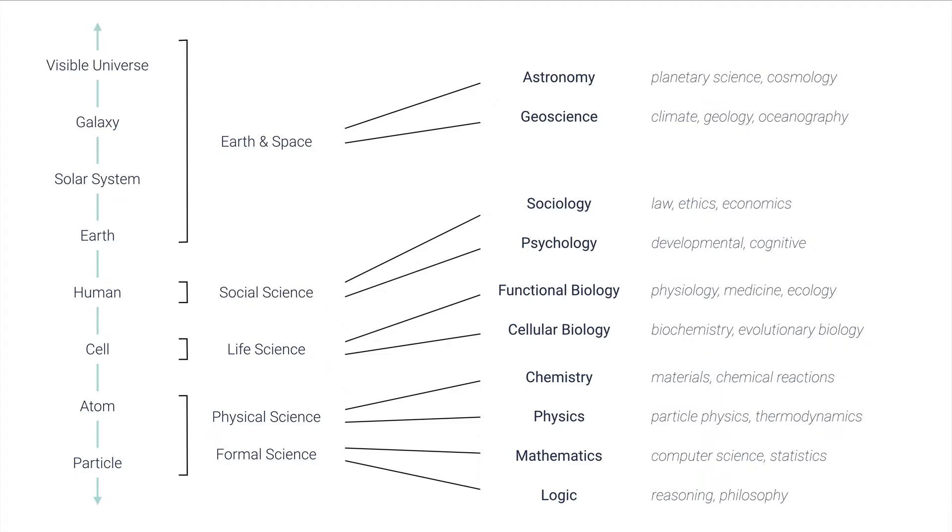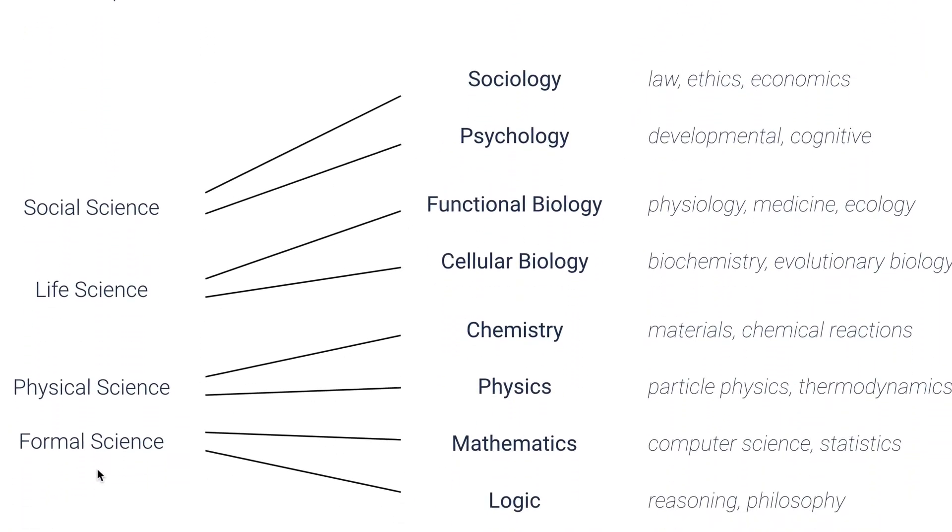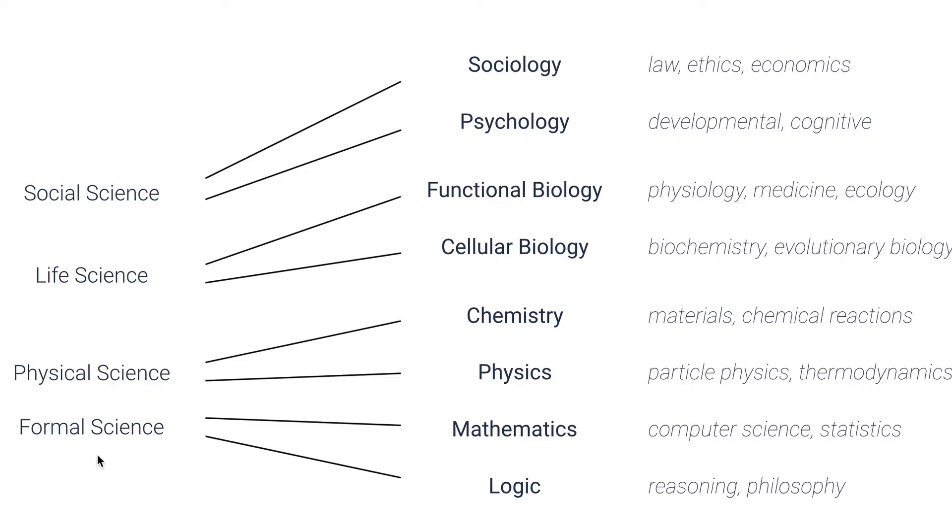In this area here—Earth and space, social science, life science—these are the major branches of science and math. If we look at Earth and space science, that's astronomy and geoscience. We zoom in a little bit, we get to the social sciences: sociology and psychology. Zoom in even further and you're at life sciences with the biologies.